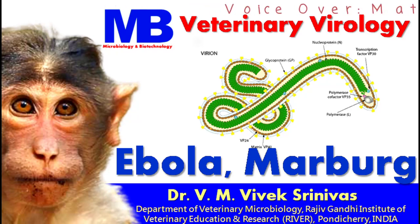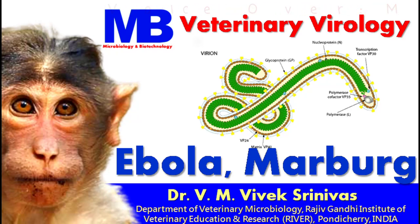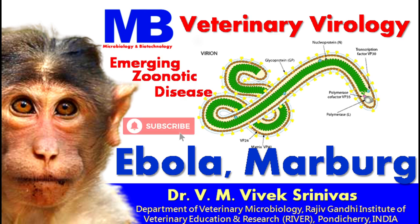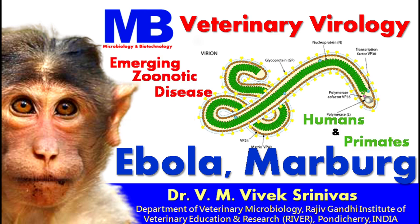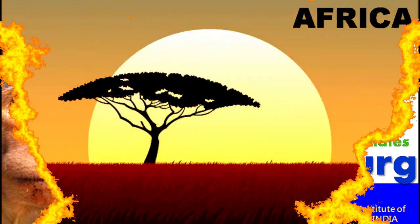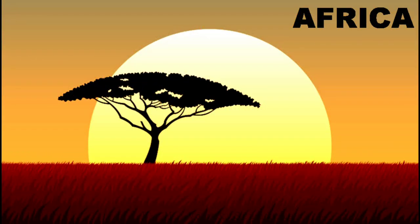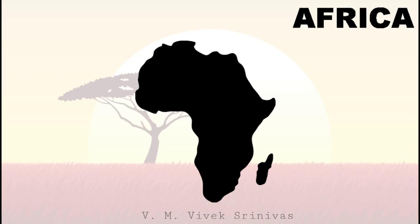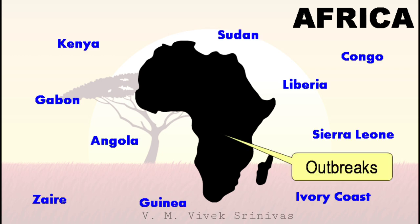In this video presentation, we will discuss about the Ebola and Marburg viral disease. This is a deadly emerging zoonotic viral disease, commonly affecting humans and non-human primates. These deadly zoonotic viral diseases have occasional outbreaks that occur primarily in the African continent. Outbreaks have been recorded in various countries in Central Africa, West Africa, and East Africa.